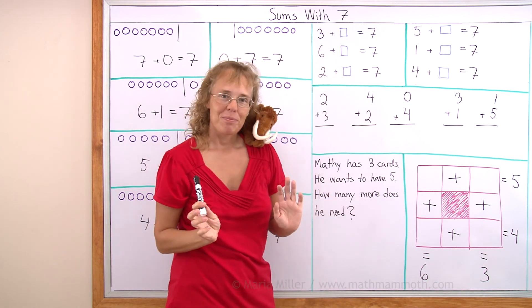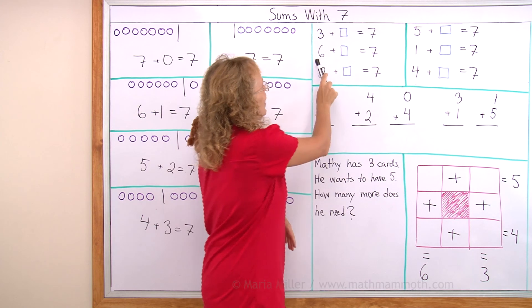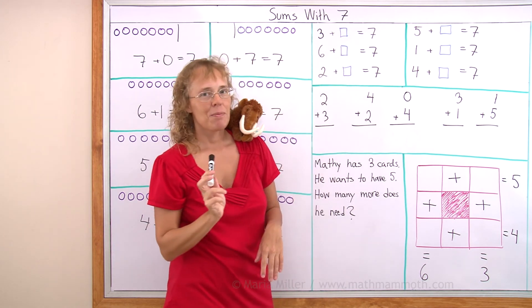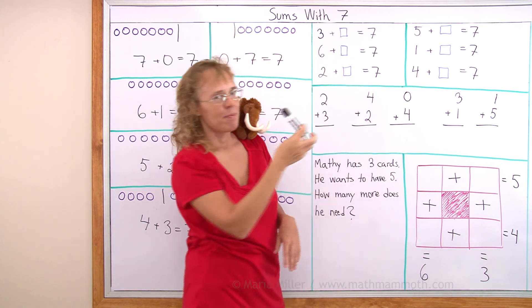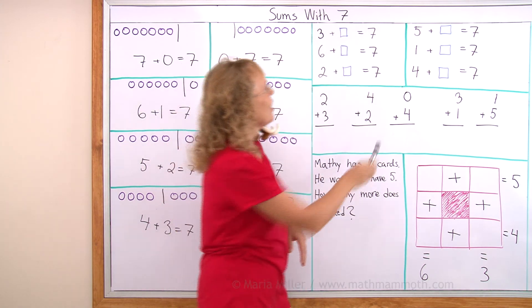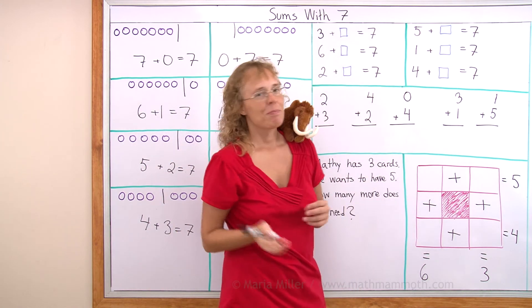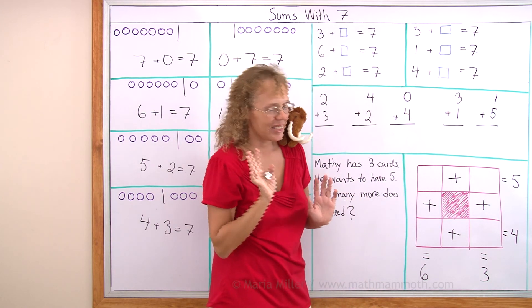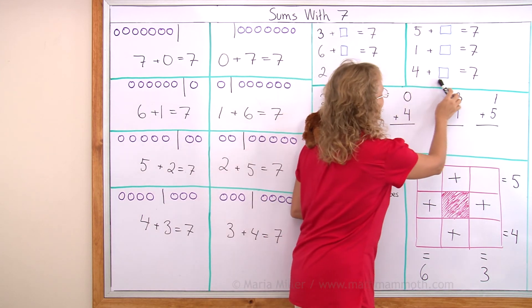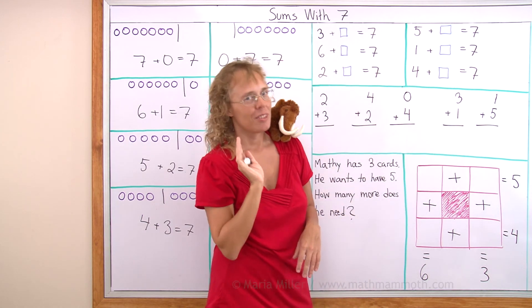Three and what number makes seven? Four, right? Six plus what number makes seven? One. Two plus how many makes seven? Five. Five plus how many makes seven? Two, right? One plus how many makes seven? Six, correct? Four plus how many makes seven? Three.